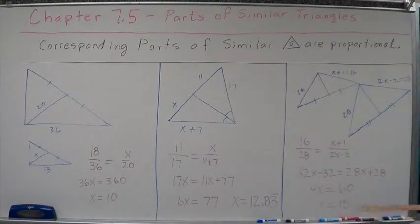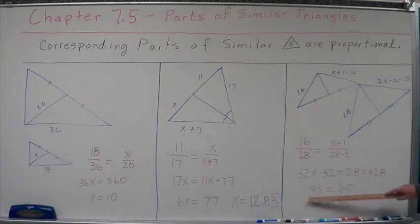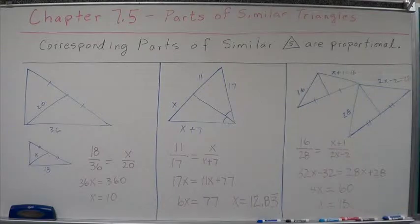Combine like terms. Subtract the 28 from both sides and then add 32 to both sides. We come up with 4x equals 60, x equals 15.